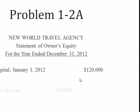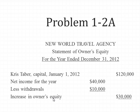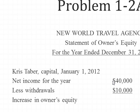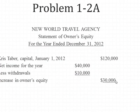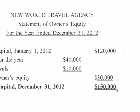If we had any additional investments, we would list those. However, if there are no additional investments, we then list the net income for the year. We determined the net income was $40,000 on the income statement, so we bring that in. We then list the withdrawals of $10,000 and deduct this amount — less withdrawals, $10,000. We then determine the increase in owner's equity: $40,000 income minus a $10,000 draw gives us an increase of $30,000. Adding the beginning capital gives us Chris Tabor capital, December 31, 2012, of $150,000.